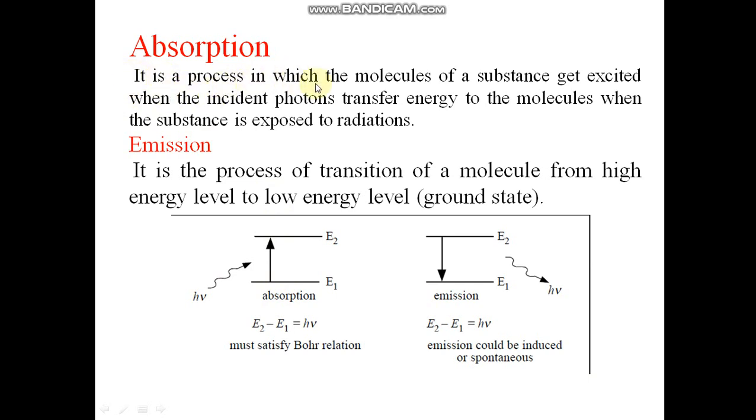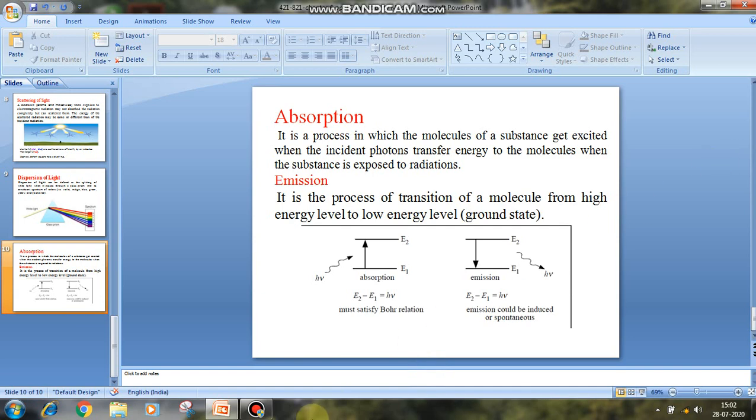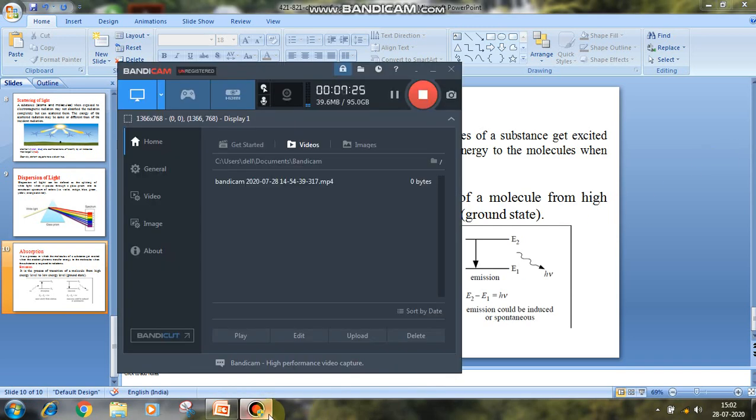Absorption: It is a process in which the molecule of a substance gets excited when the incident photon transfers energy to the molecule. When the substance is exposed to radiation, emission is the process of transition of a molecule from high energy level to low energy level ground state.